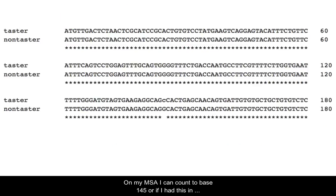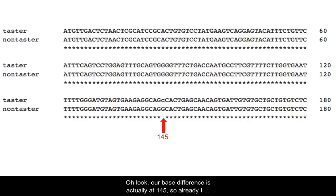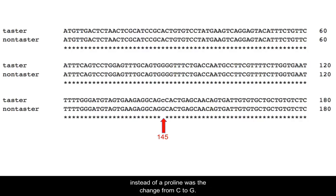On my multiple sequence alignment I can count to base 145, or if I had this in an APE program or some other sequence analysis tool, I would use a tool to find this position. Our base difference is actually at base 145, so I already know that the base change that gave us an alanine instead of a proline was the change from a C to a G.